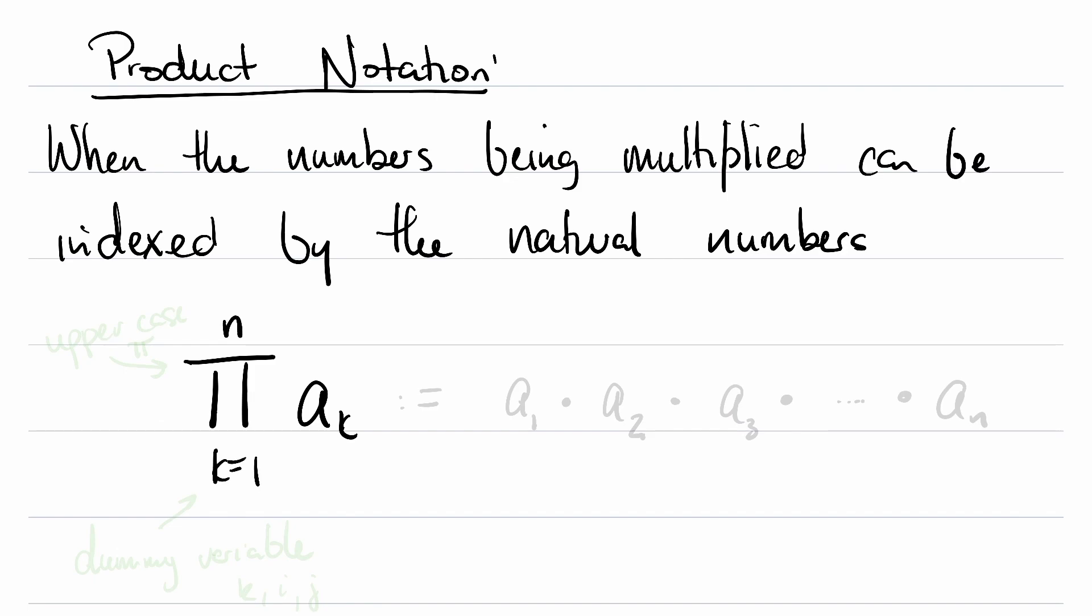a sub k is going to be some kind of number, and it is going to be indexed by these natural numbers as k ranges from 1 up to n. This guy is an uppercase pi. This k down here is called a dummy variable. It doesn't do anything but help us count. Sometimes it's like k or i or j. You can use anything as a dummy variable.